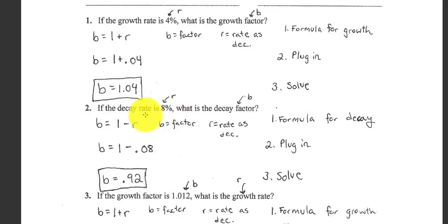Now they give you a decay rate. So now we can't use 1 plus R. We use 1 minus R. Again, change 8% to a decimal. 1 minus 0.08 gives us 0.92, right? And that makes sense, right? If we have a decay factor and a decay rate, the B should be between 0 and 1. Growth factor should have a B that's greater than 1.